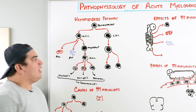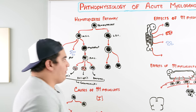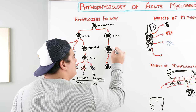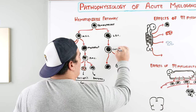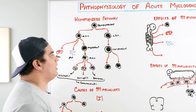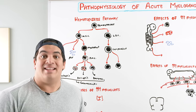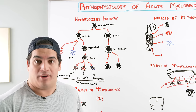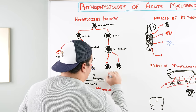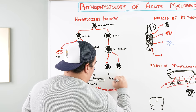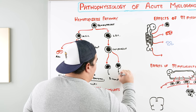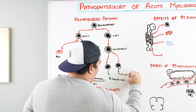Just to quickly go over the rest of the hematopoiesis pathway: lymphoid stem cells become something called a lymphoblast — this is not important to this lecture, but when we talk about ALL and CLL it will become important. These lymphoblasts differentiate into B lymphocytes and T lymphocytes.